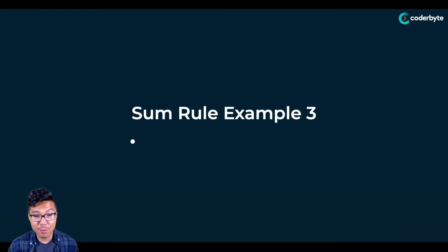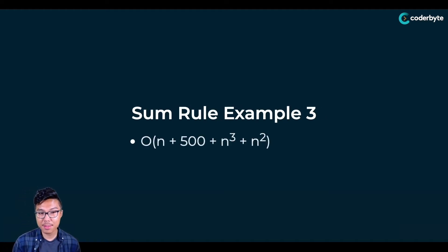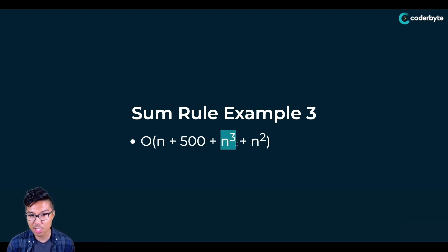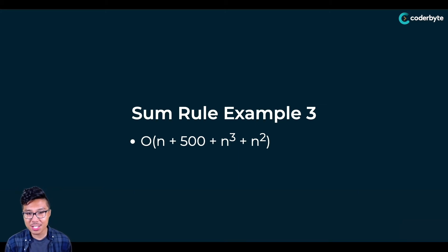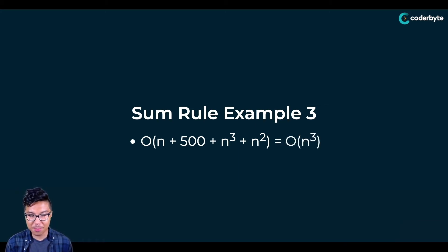Switching to another example: given an unsimplified Big O of n plus 500 plus n cubed plus n squared, you can quickly recognize that the winner here is just n to the third power, or n cubed. The final answer is just O of n cubed. Notice that we're allowed to drop literally every value that's smaller than n cubed. So really take this rule to heart.